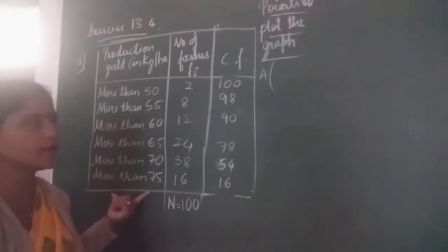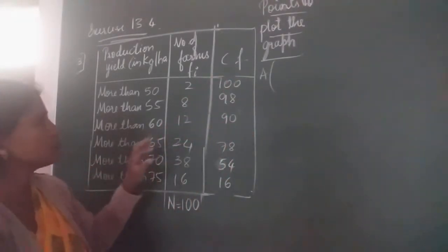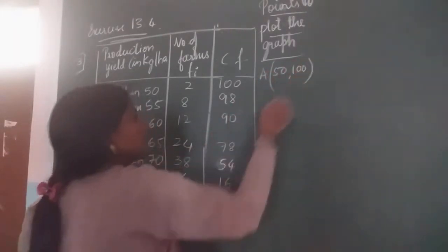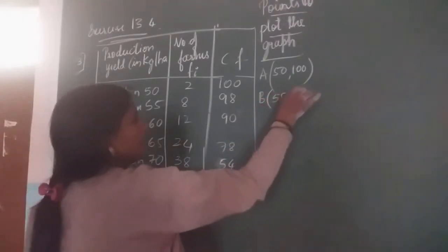It will be in decreasing order, that will be more than type. So let us take the points to plot the graph here. The points are: point A is 50, 100. Next, point B is 55, 98.